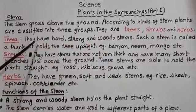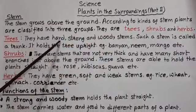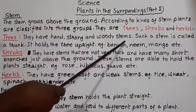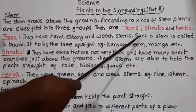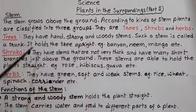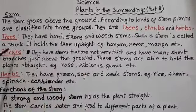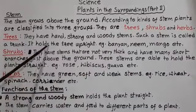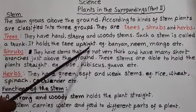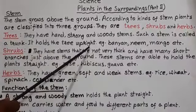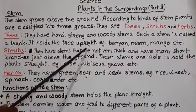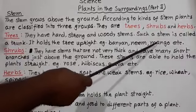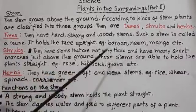Now trees, they have hard, strong and woody stems. This type of stem is known as a trunk. It holds the tree upright. Examples of trees are the banyan, neem, mango, etc.